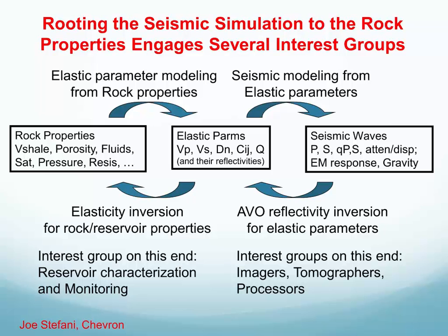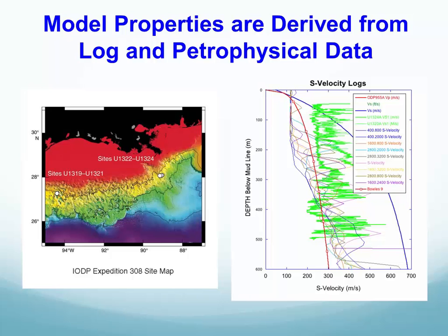The model properties were derived using as much realism as possible. This is an example of work done to calibrate the S-wave velocities near the seafloor. S-wave velocity near the seafloor can be very low, and we collected data from various sources to get an idea of what realistically low S-wave velocities near the seafloor would be.